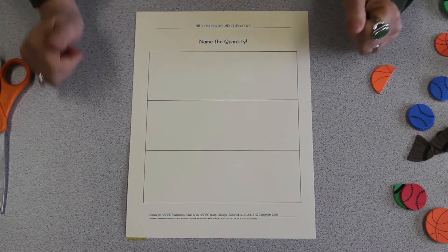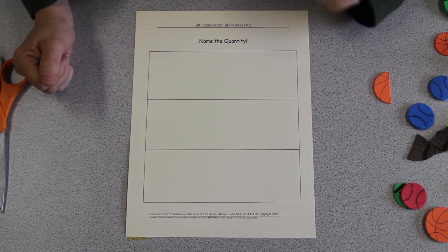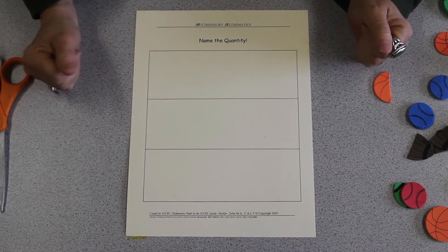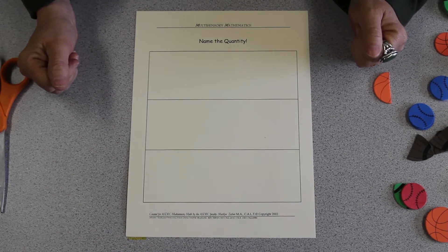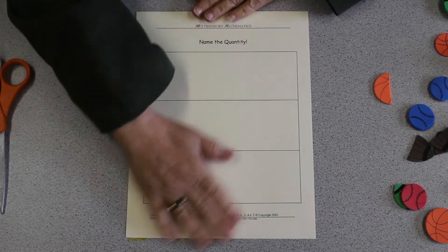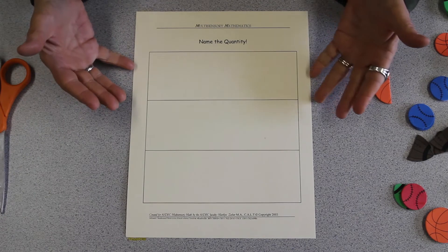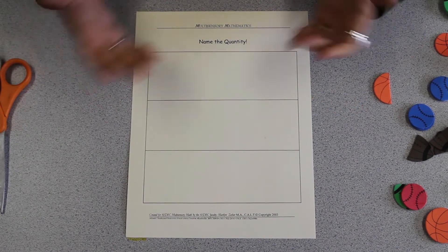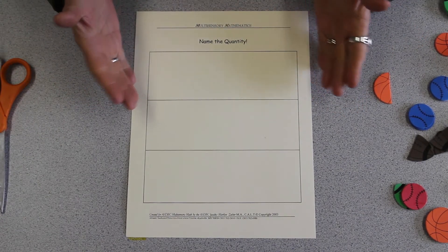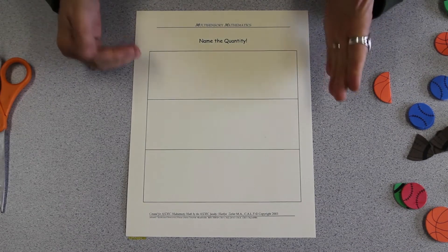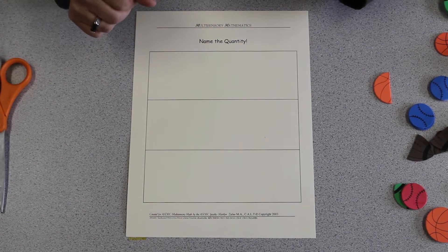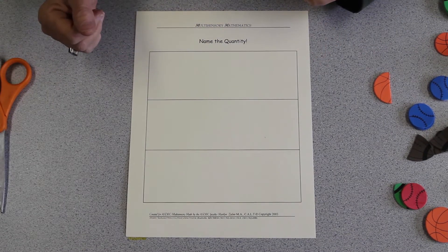Today we're going to be doing an activity that in our Multisensory Math classes and workshops we call Name That Quantity. It's one where we take a simple graphic organizer made with any word processing program, and we ask the student to create his own concept sheet which illustrates the vocabulary that we're trying to teach.